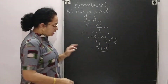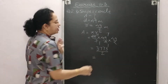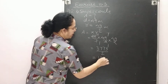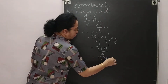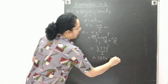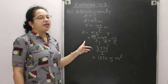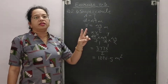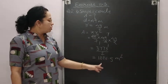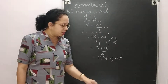The denominator remaining is 2, so 3773 ÷ 2 = 1886.5. The unit is meter squared because area is a two-dimensional figure with length and breadth, so the power is 2. The final answer is 1886.5 meter square.